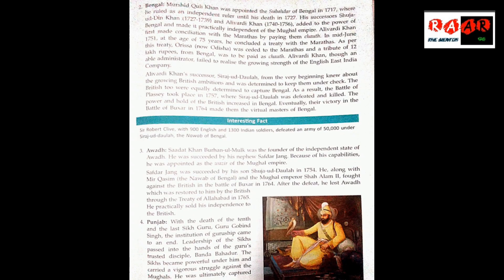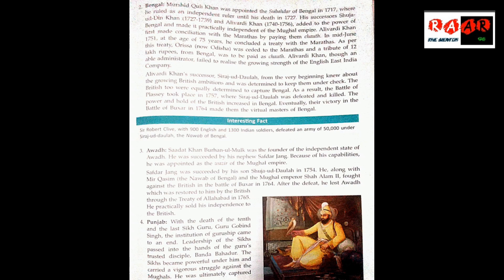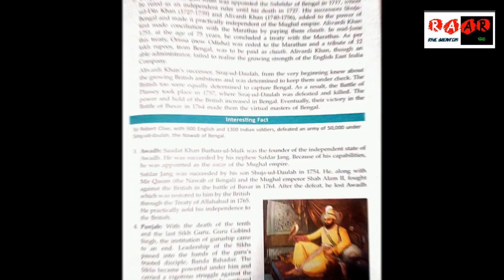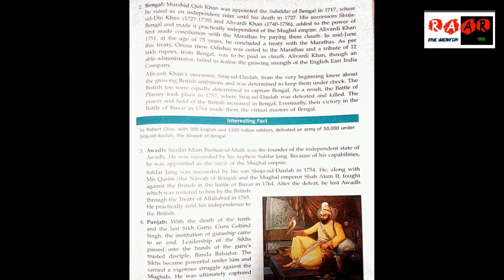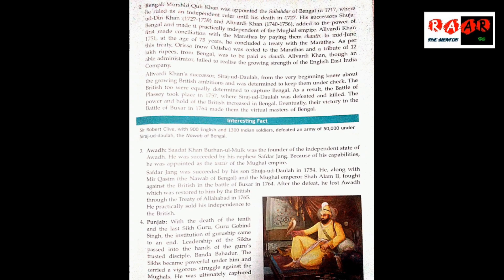In 1757, at the age of 75, Aliwardi Khan concluded a treaty with the Marathas. As per the treaty, Odisha was given to the Marathas and a tribute of 12 lakh rupees from Bengal was to be paid as Chauth. Under the treaty, the Marathas would not collect money from the Odisha region, and Bengal would pay 12 lakh rupees.